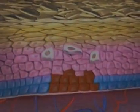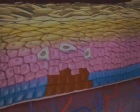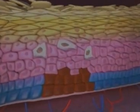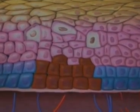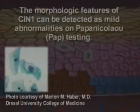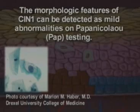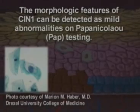Low-grade lesions are characterized by mild morphologic changes to the epithelium. Lesion grading is based on the level of epithelial abnormalities. In CIN1, abnormal cells are concentrated in the basal third of the cervical epithelium. PAP testing can detect low-grade squamous epithelial lesions as mild abnormalities, but cannot predict their potential for malignant evolution.